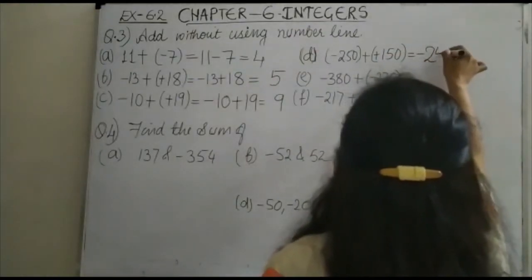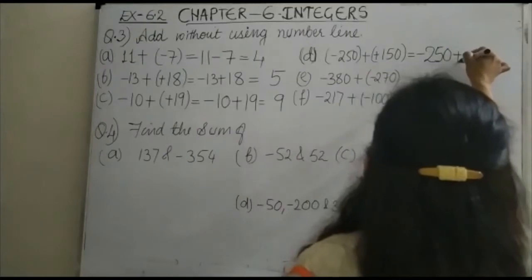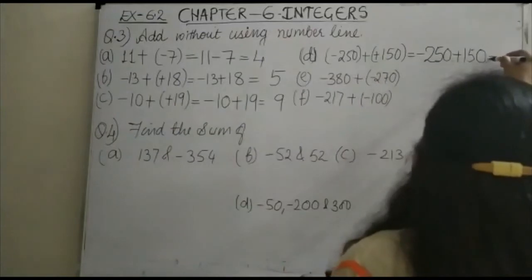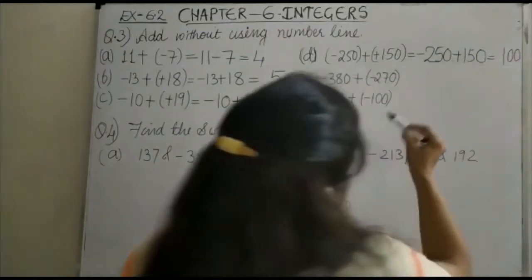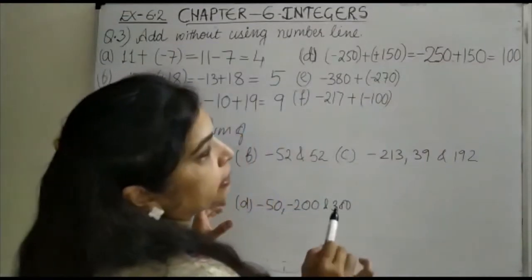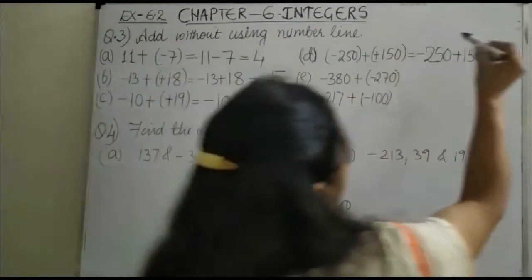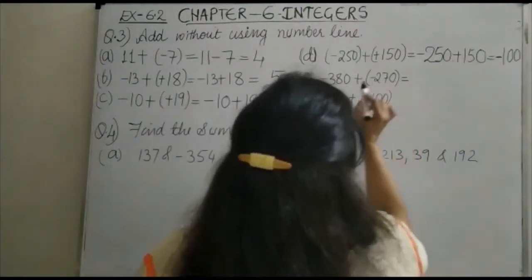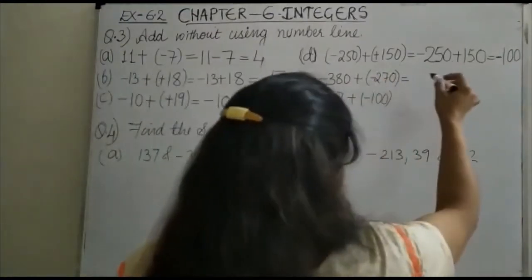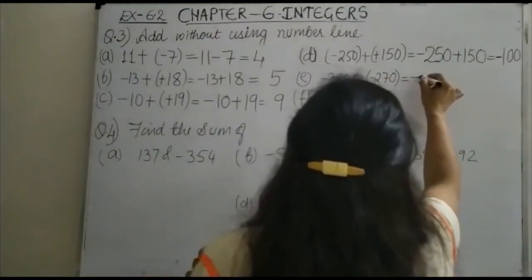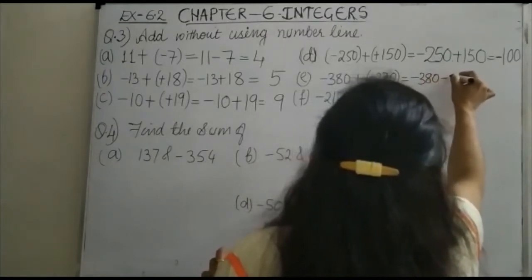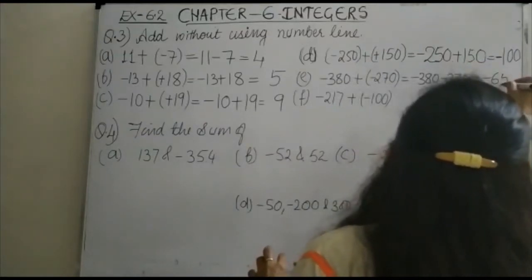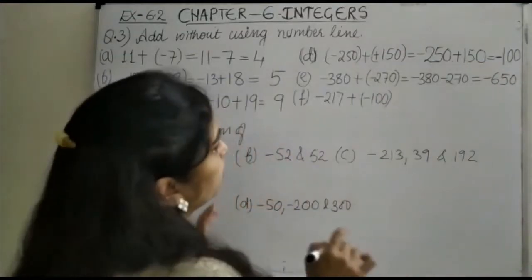Here you have -250 + 150. Plus and minus gives minus, so this will be equal to 100. The bigger number is 250 and the sign is minus, so the answer is -100. When both numbers are negative, such as -380 and -270, you add them to get -650. Both negative numbers are added and the sign will be minus.